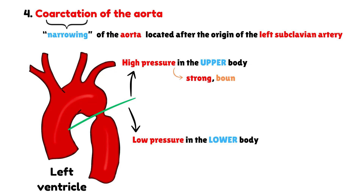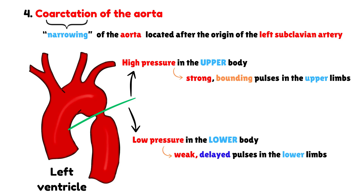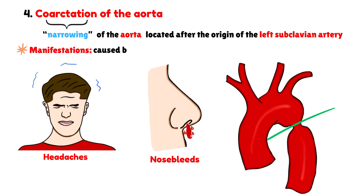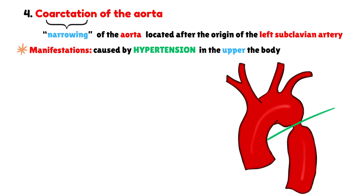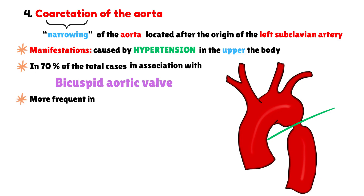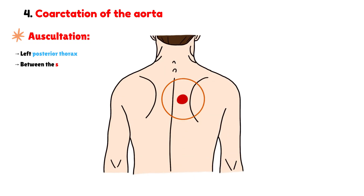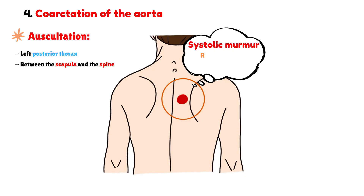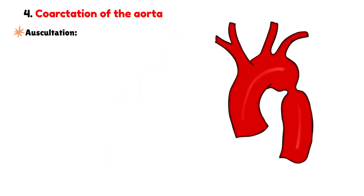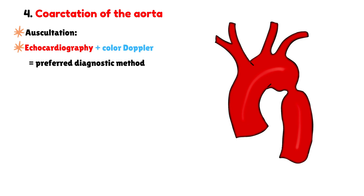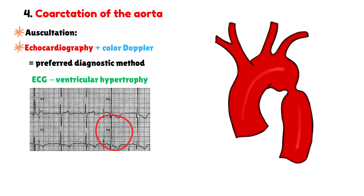Clinically, this presents as strong, bounding pulses with high blood pressure in the upper limbs and weak, delayed pulses with low pressure in the lower limbs. Other symptoms may include headaches and nosebleeds, mainly caused by hypertension affecting the upper part of the body. Interestingly, coarctation of the aorta is found in about 70% of cases in association with a bicuspid aortic valve. It occurs more frequently in males, and when it appears in females, it can be associated with Turner syndrome. On auscultation, best heard on the left posterior thorax between the scapula and the spine, there is a systolic murmur that may radiate along the back. Echocardiography with color Doppler is the preferred diagnostic method, while the electrocardiogram typically shows signs of left ventricular hypertrophy.